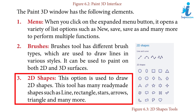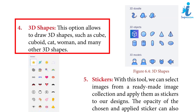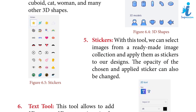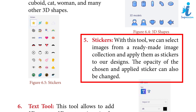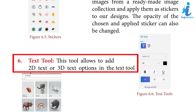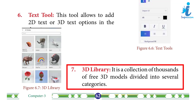Three: 2D Shapes — this option is used to draw 2D shapes; this tool has many ready-made shapes such as line, rectangles, stars, arrows, triangles, and many more. Four: 3D Shapes — this option allows you to draw 3D shapes such as cube, cat, women, and many other 3D shapes. Five: Stickers — with this tool we can select images from our ready-made images collection and apply them as stickers to our designs; the opacity of the chosen and applied sticker can also be changed. Six: Text tool — this tool allows adding 2D text or 3D text options in drawings. Seven: 3D Library — it is a collection of thousands of free 3D models divided into several categories.